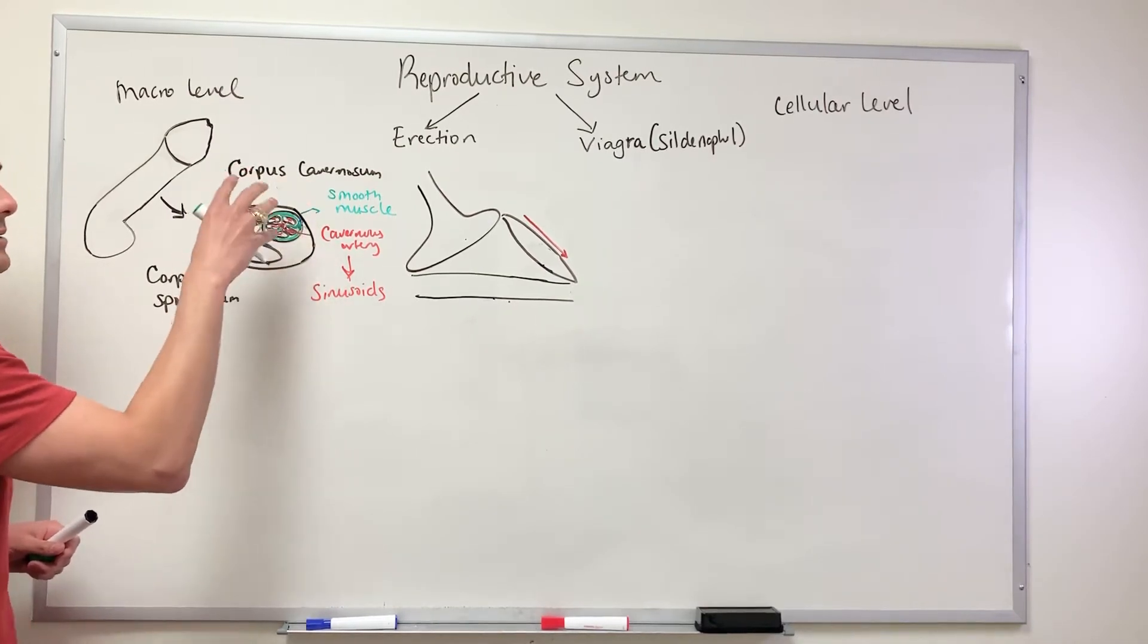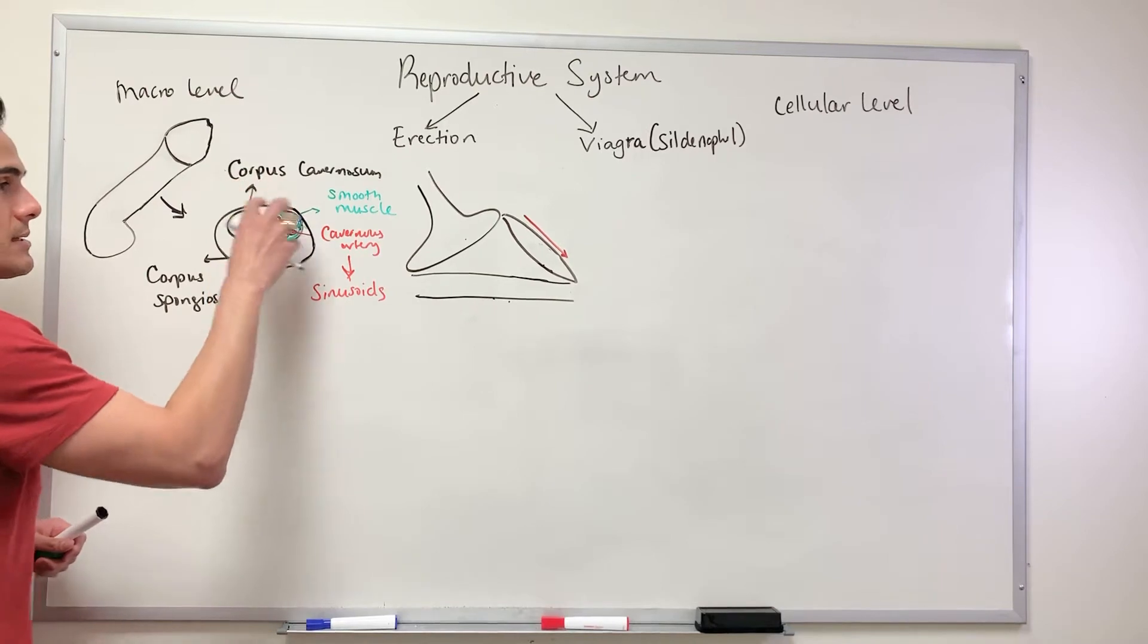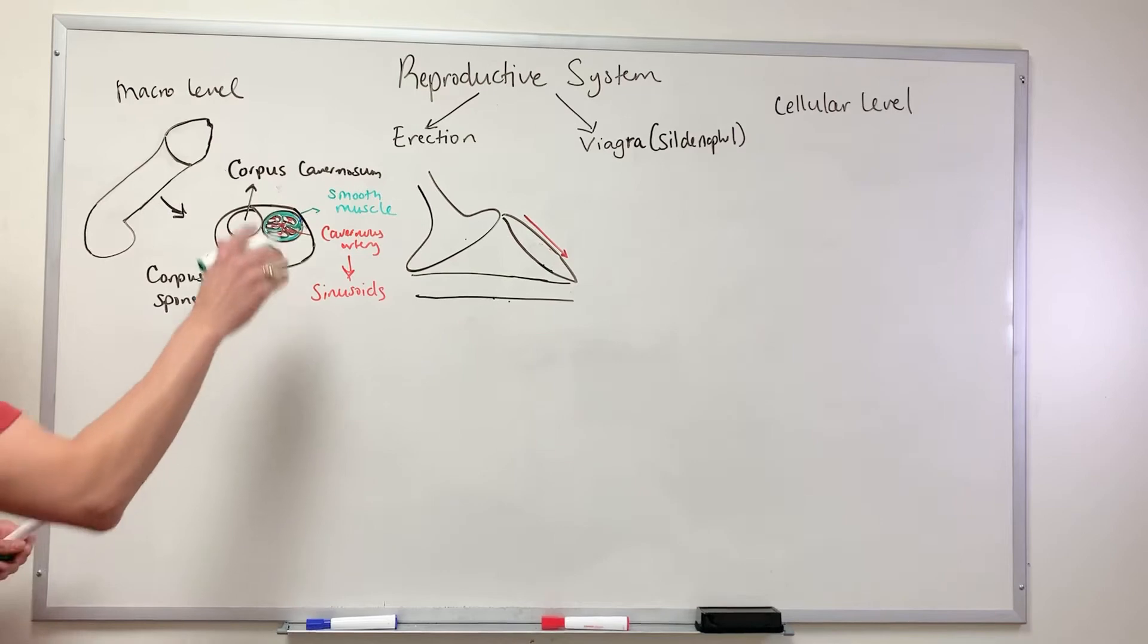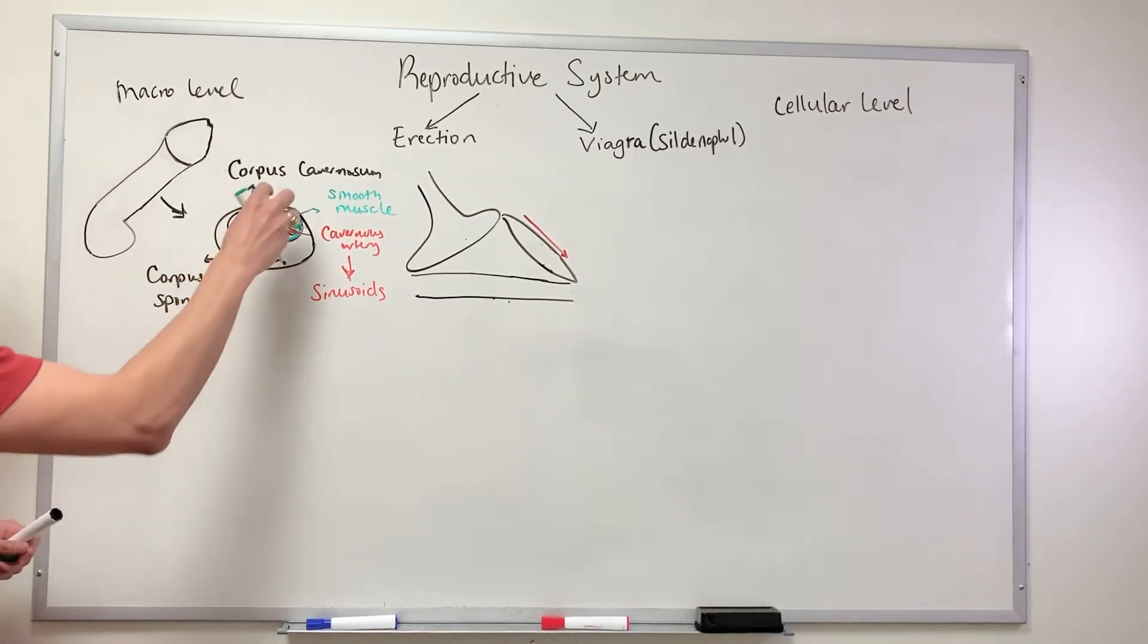This is what's going on during the male erection. This is what's occurring at a macro level. Not only does this have to happen here with blood filling into the sinusoids, but one other thing is blocking the venous return.